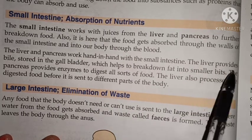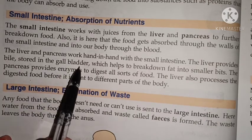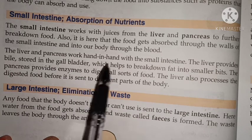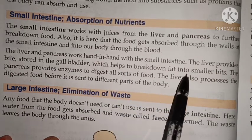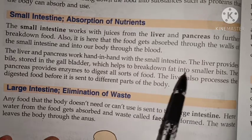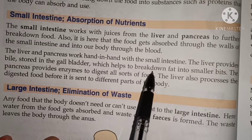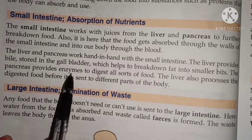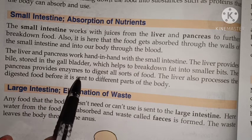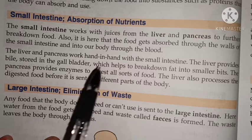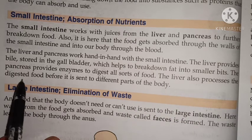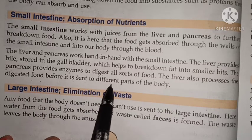The liver provides bile, stored in the gallbladder, which helps to break down fat into small bits. The pancreas provides enzymes to digest all sorts of food. The liver also processes the digested food before it is sent to different parts of the body.